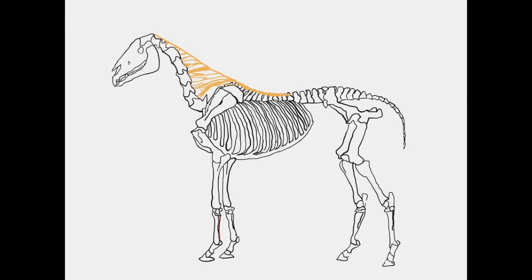The yellow structure that we see here is our nuchal ligament, with both our funicular and laminar parts. We have the scapula, humerus, radius, and ulna. Note that in the equine the ulna is not fully developed and is in fact fused to the radius. We have our carpal bones, our metacarpal bones, and then we have our long and short pastern and our cannon bone.